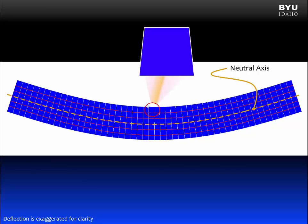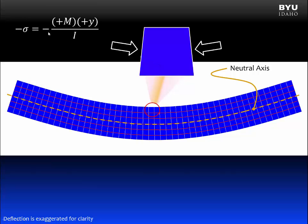Let's look at what's going on at the top of this beam. Here is an element taken from the beam, and we can see that it has a deformed shape. That deformation must be occurring because of compression on the element, which creates a normal compressive stress. From our bending moment diagram, the bending moment at this point was positive — in fact, it was positive over the entire beam. So in the flexure formula, we would put in a positive value for moment. The value for y, because we are above the neutral axis, is also positive. I, the moment of inertia, is always positive because it's a section property. The negative sign on the flexure formula results in a negative stress in this situation, which makes sense because compression results in a negative normal stress.